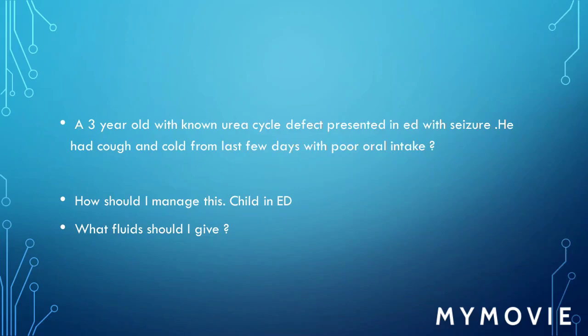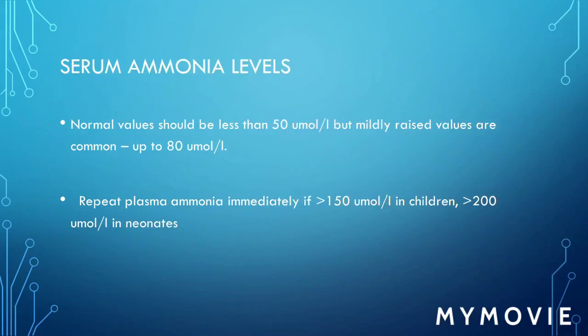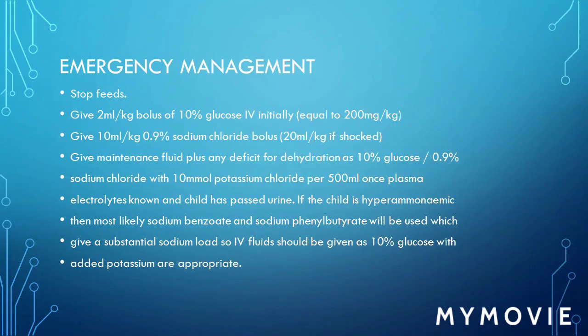Normal serum ammonia values should be less than 50 micromoles per litre, but mildly raised values are common up to 80. Repeat plasma ammonia immediately if it is more than 150 in children and more than 200 in neonates. While sending the second sample, start management: stop feeds and give a 2 ml/kg bolus of 10% glucose IV initially, even if blood glucose is normal, to prevent catabolism.